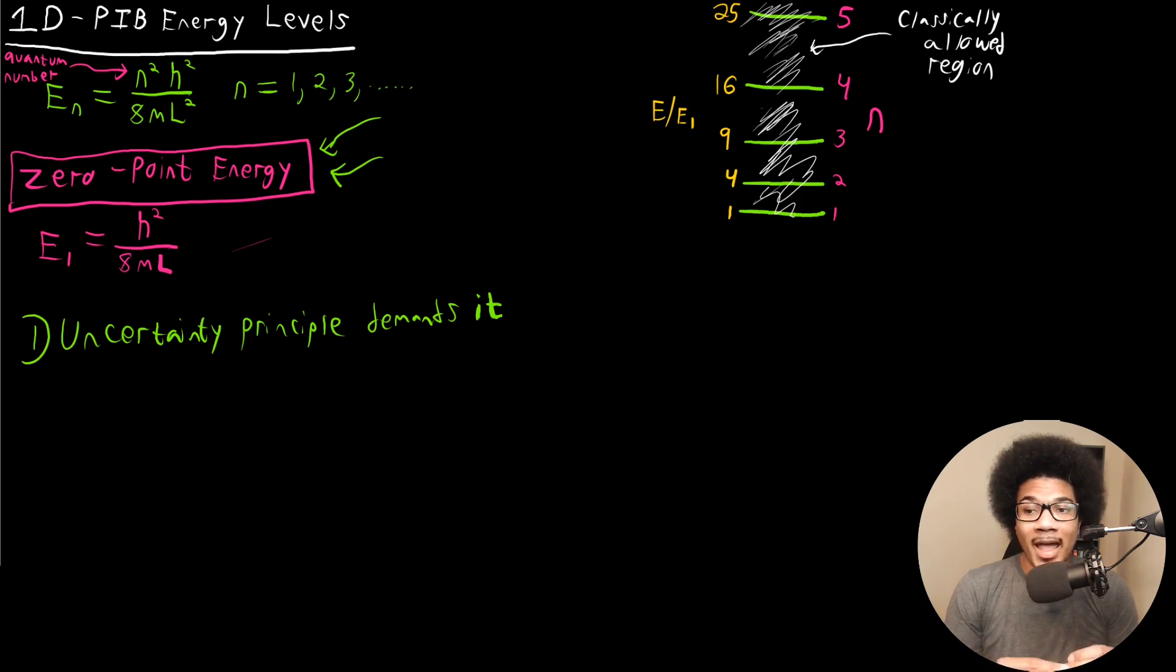So this particle has to have some kinetic energy to it in order for that to be the case. Because if it was motionless, then of course we could know the momentum of the particle exactly, but we can't. And so the uncertainty principle demands it.